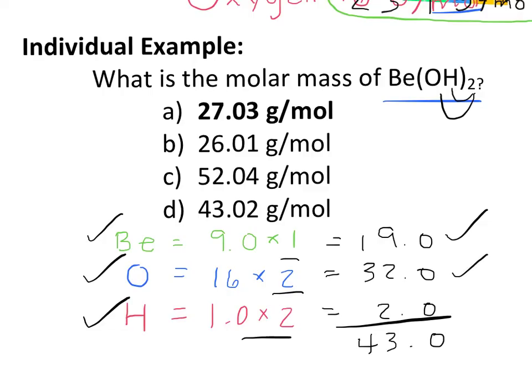And if I add 9 plus 2 plus 2, that gives me 13. And 1 plus 3 is 4. And that gives us an answer of 43.02 grams per mole, or D as our final answer.